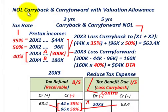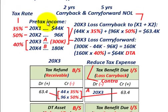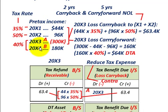We're going to be going over a net operating loss where we have a carry back and a carry forward, and we're also going to have to set up a valuation allowance for this net operating loss. We're going to be given our pre-tax income for four years — 20x1 through 20x4 — and also the tax rate for each of those years.